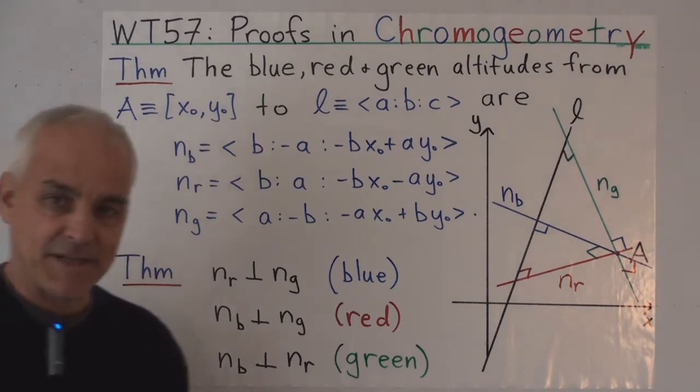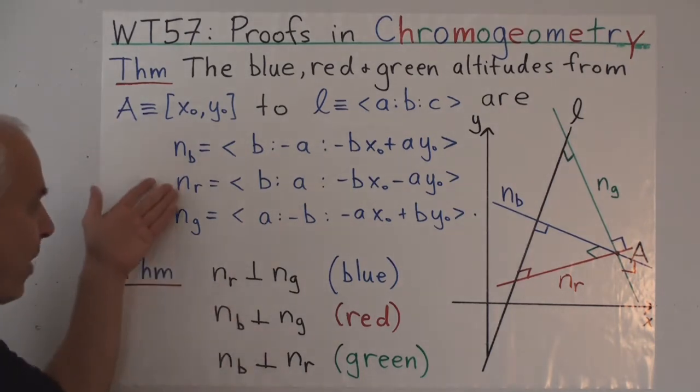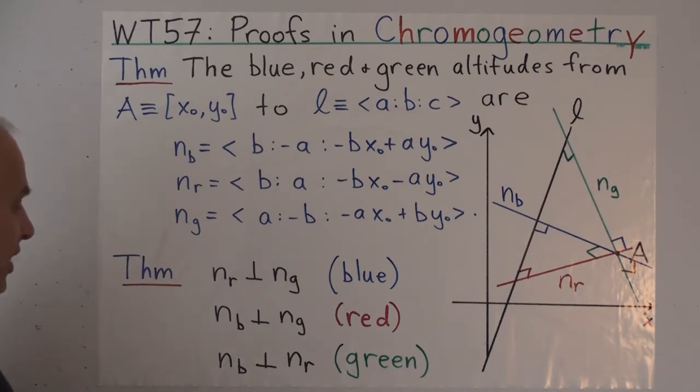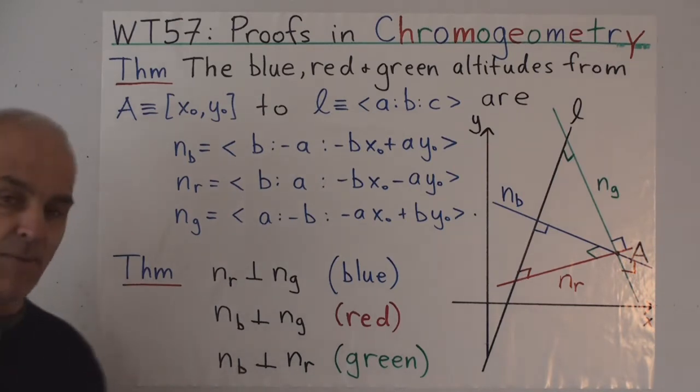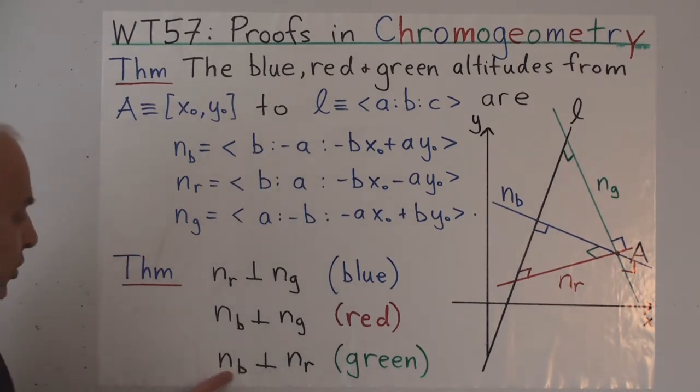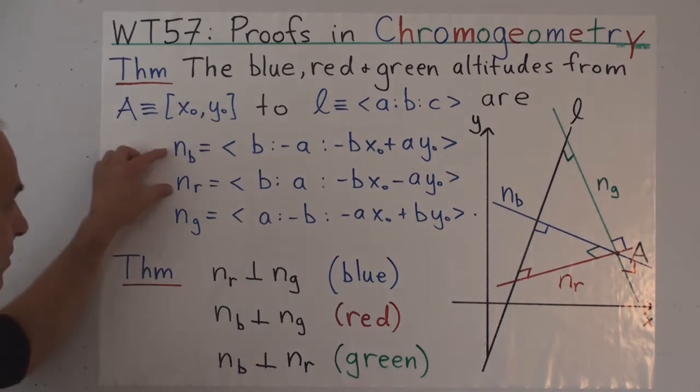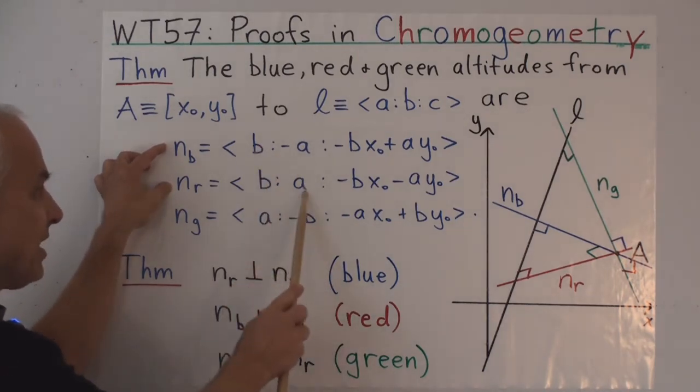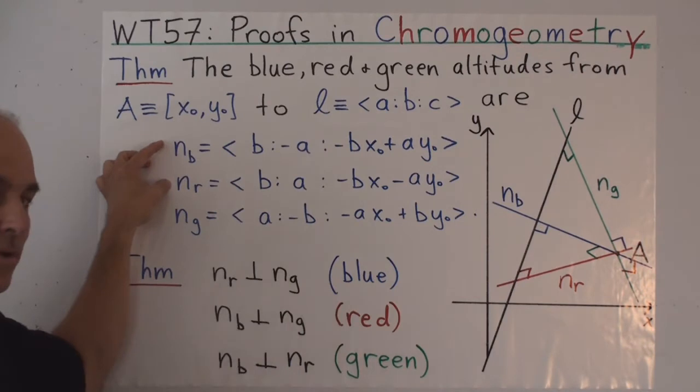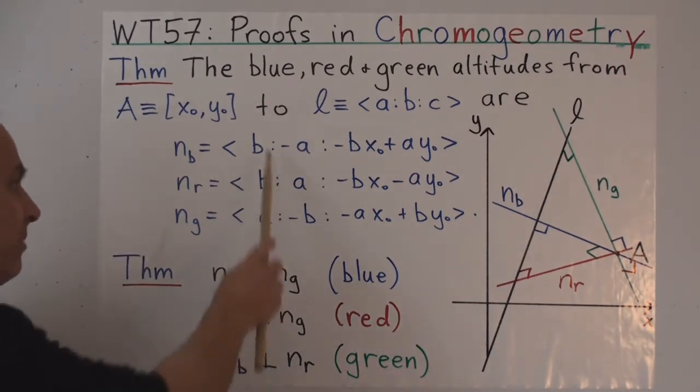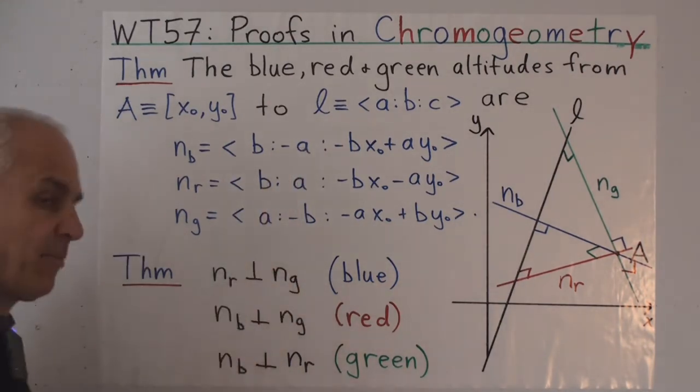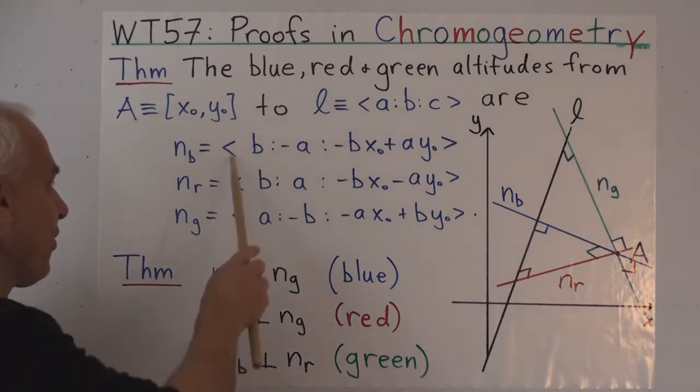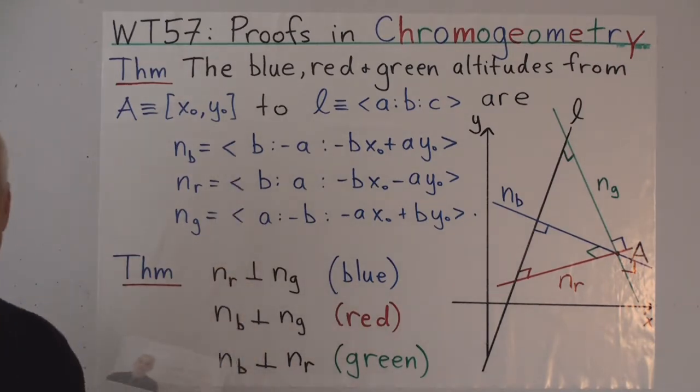How do we check this theorem? We just look at the equations of the lines and check perpendicularity. Let's check that the blue and red altitudes are green perpendicular. We check that this times this plus this times this equals zero. It's automatic because B times A plus minus A times B is indeed zero. So those are automatically green perpendicular.